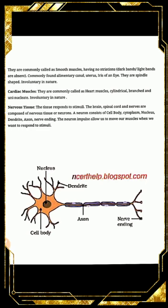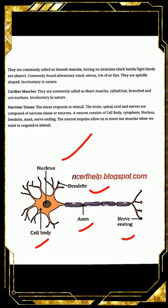A diagram is shown here. The nucleus is present in the center within the cell body. The axon is the most elongated part. Dendrites collect impulses (messages) from all directions and pass them to the cell body; the cell body passes them to the axon; the axon stores them at the nerve ending in the form of chemicals like acetylcholine. There is a microscopic gap between two neurons called a synapse. The chemicals open the channels on the dendrites of the next neuron, allowing information to flow from one neuron to the next.